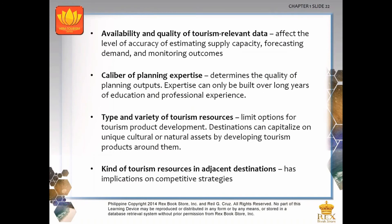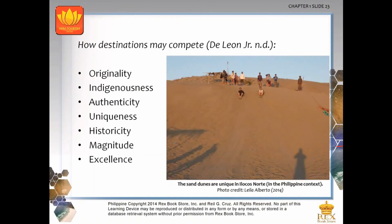The availability and quality of tourism-relevant data affects the level of accuracy in estimating supply capacity, forecasting demand and monitoring outcomes. The caliber of planning expertise determines the quality of planning outputs, and expertise can only be built over long years of education and professional experience. The type and variety of tourism resources limits options for tourism product development; destinations can capitalize on unique cultural or natural assets by developing tourism products around them. The kind of tourism resources in adjacent destinations has implications on competitive strategies.